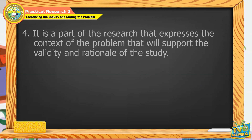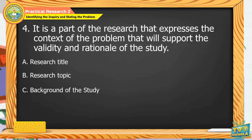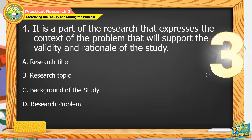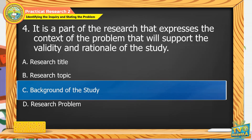Number 4. It is a part of the research that expresses the context of the problem that will support the validity and rationale of the study. A. Research title. B. Research topic. C. Background of the study. D. Research problem. Did you answer letter C? You are correct! Background of the study.